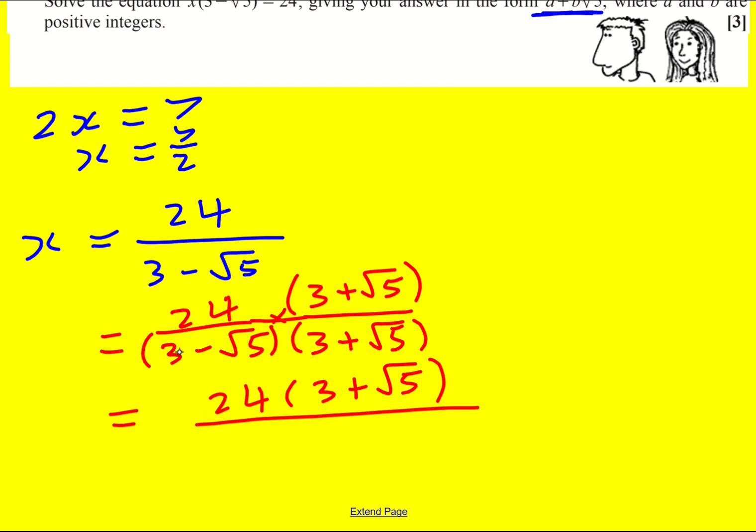And then here I've got a double bracket. So I do 3 times 3 is 9. I do 3 times root 5. But then I do minus root 5 times 3, which is minus 3 root 5. And these cancel.